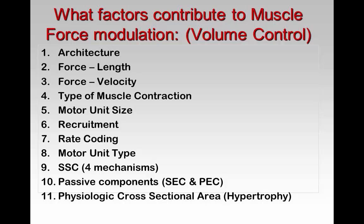With recruitment, you can definitely recruit more motor units, and that's a neural adaptation — you can train your body to recruit all the motor units in your body. And when we say rate coding, you need to add it alongside recruitment. As we recruit new motor units, you can increase the rate coding to also get a bump in force production. Motor unit type — fast twitch versus slow twitch — they have different force production capabilities.